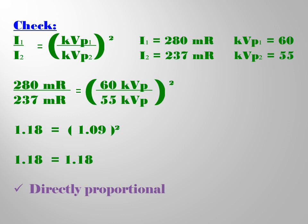Multiply by 2 equals 1.18. So both intensity and KVP have the same answer. So the X-ray quantity is proportional to the square of KVP.